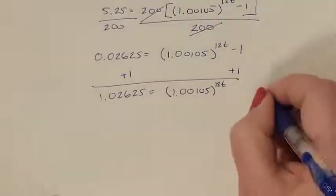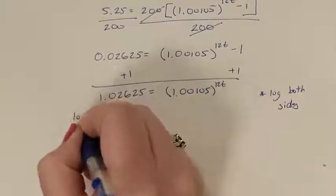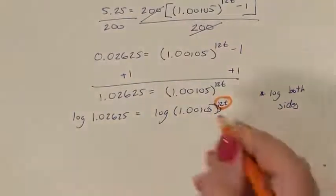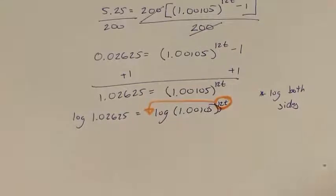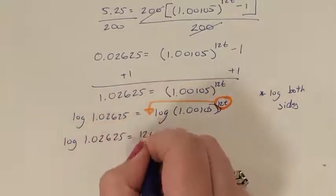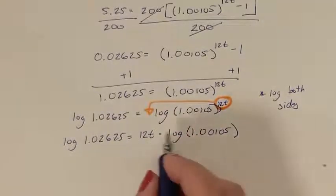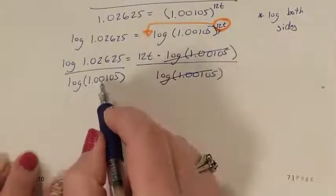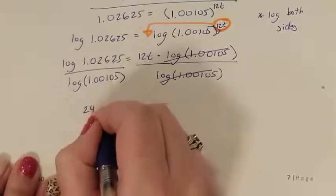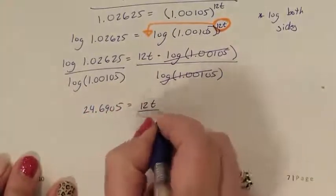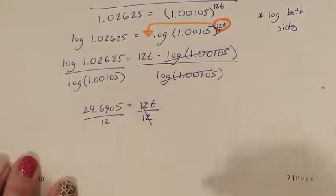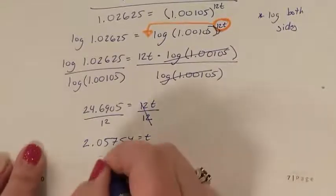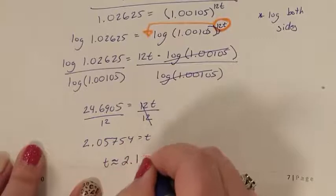Now I'll solve this using the one-to-one property — taking the log of both sides. Both sides have logs, which means the exponent needs to move to the front of the log using the power property. Then divide both sides by log of 1.00105 to isolate 12t. Simplifying the fraction gives 24.6905 equaling 12t. Dividing both sides by 12 gives t equals 2.05754. Rounded to the nearest tenth of a year, t is about 2.1 years.